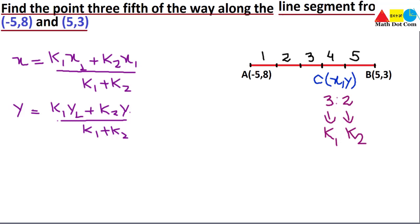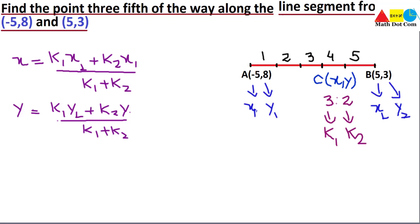For the coordinates, from the diagram: the first endpoint gives us x1 and y1, and the second endpoint gives us x2 and y2. We now have all the unknowns needed for the formula.